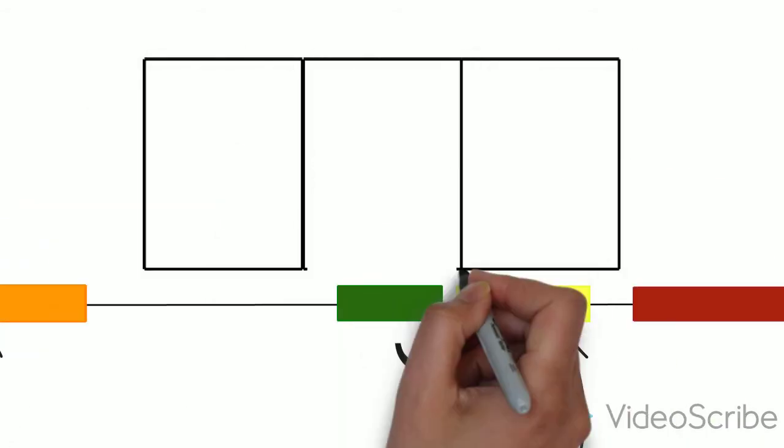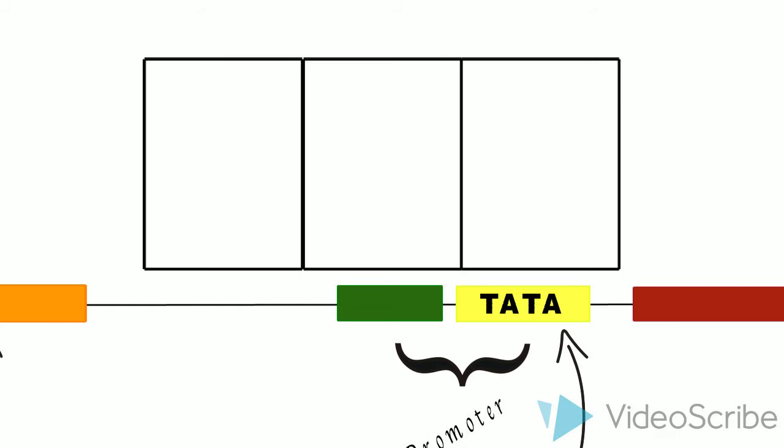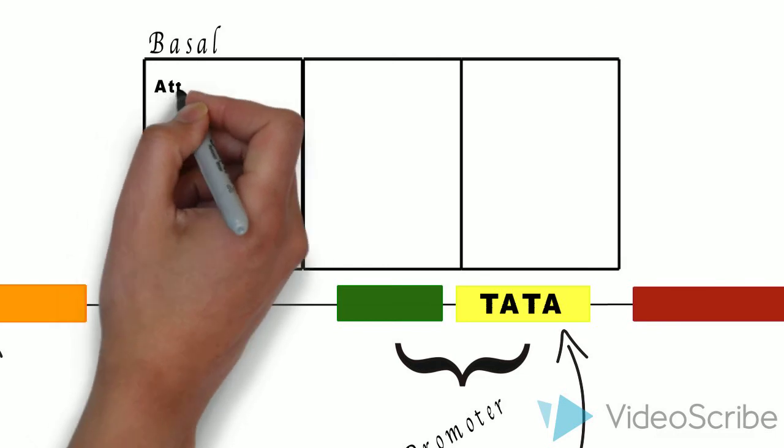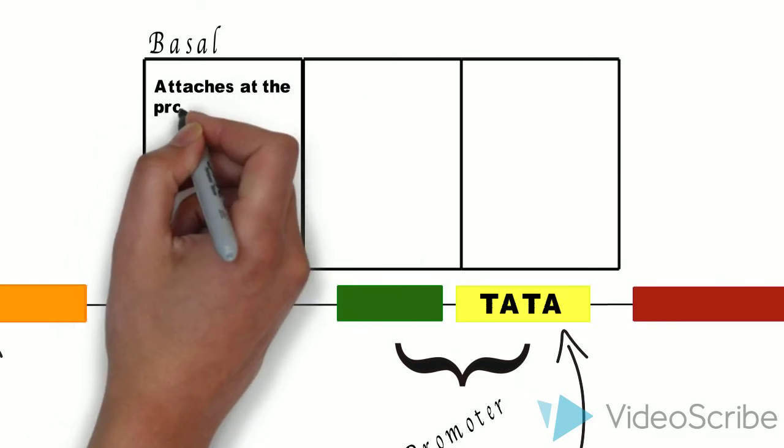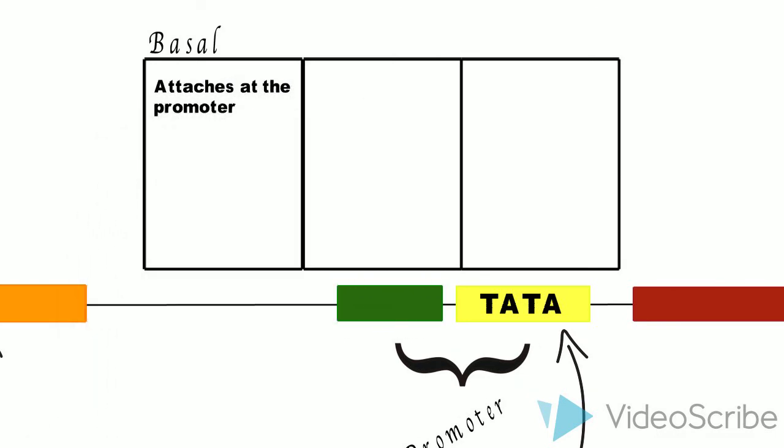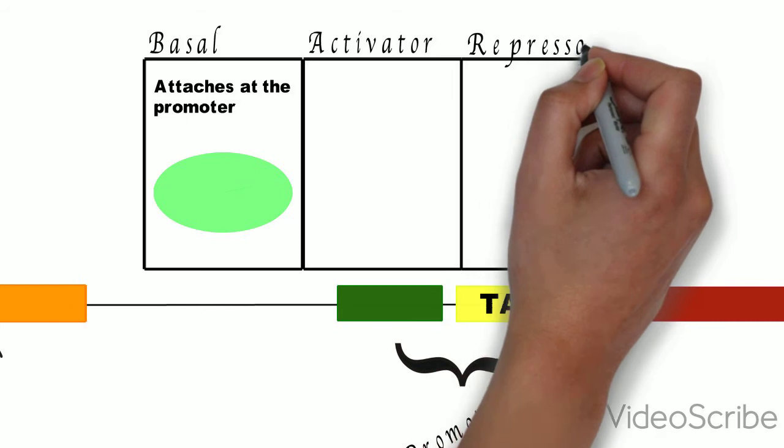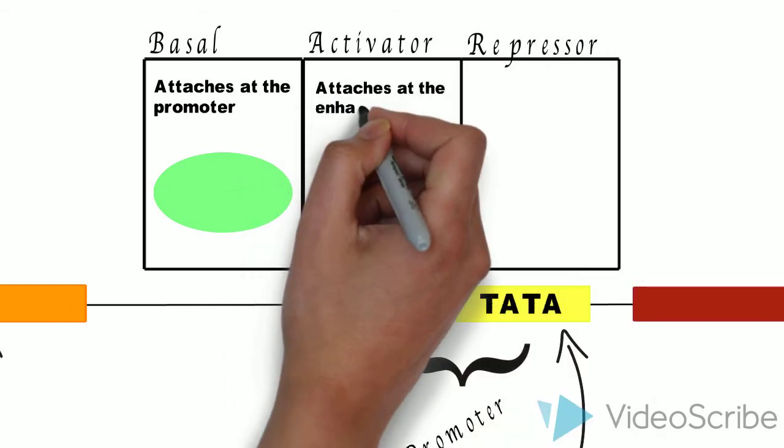I'm going to mention the three main transcription factors that are important in this process. First, we have the basal or general transcription factors. These attach at the promoter and ensure that RNA polymerase is actually able to attach to the DNA. Next, there is the activator and repressor transcription factors. These attach at the enhancer.